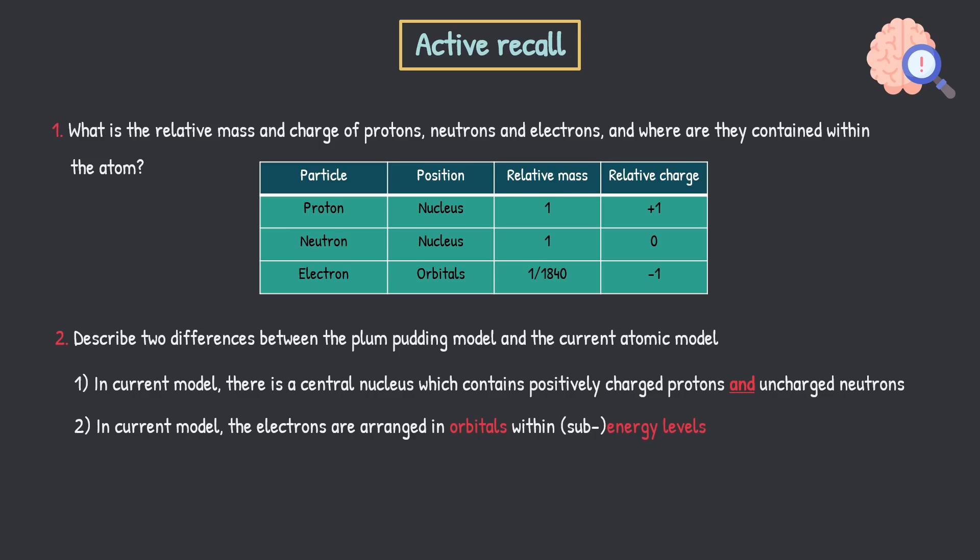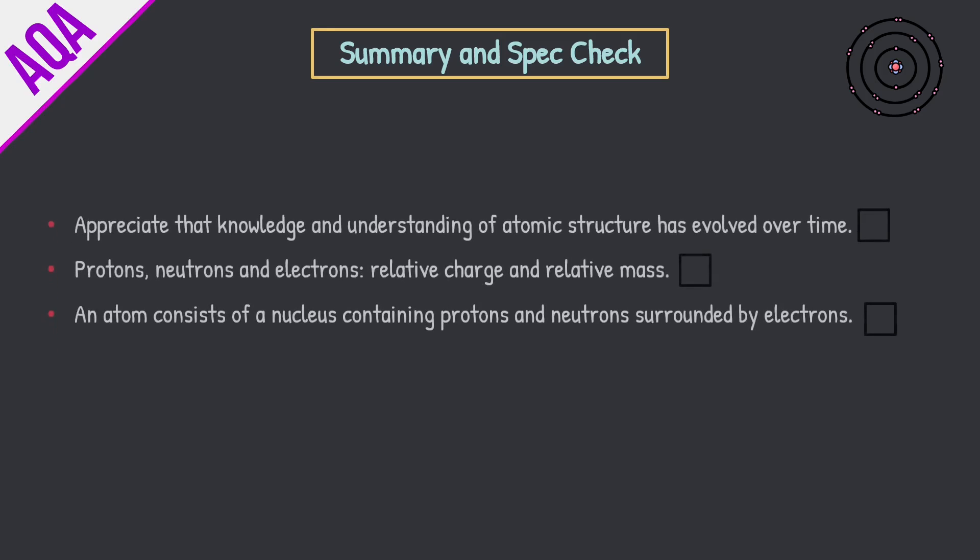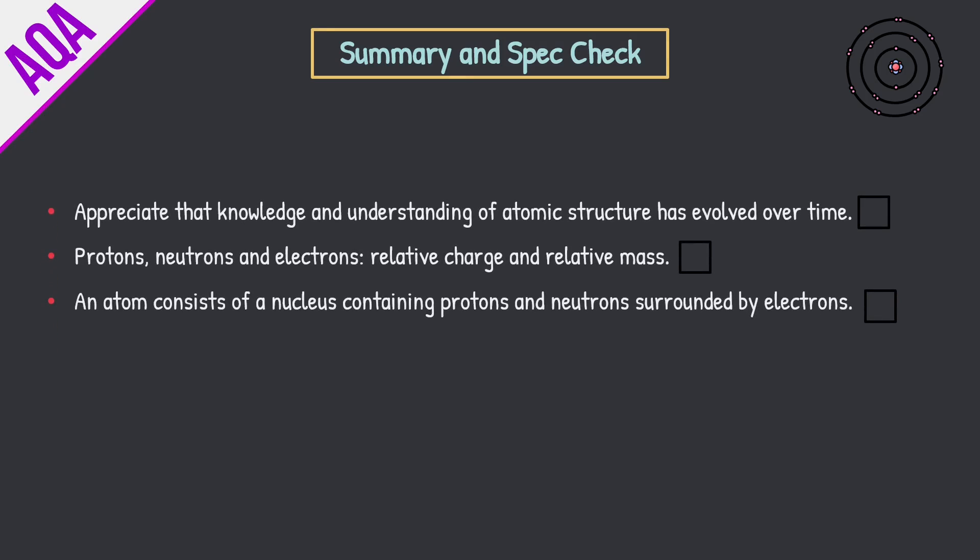Honestly, you shouldn't have to come back to this too often. When it comes onto the atomic structure topic, it's all mainly going to be about electron configuration, ionization energies, mass spec, relative atomic mass, things like that. They kind of skip over this stuff because it's more so GCSE level content. So let's quickly do a summary and spec check, ticking off everything we've learned. Appreciate that knowledge and understanding of atomic structure has evolved over time. Done. Went through the different models over time. Then we have protons and neutrons and electrons with their relative charge and relative mass. We looked at that, what they are, and then real basic stuff. An atom consists of a nucleus containing protons and neutrons surrounded by electrons. I honestly don't know why they included that, but there we go.